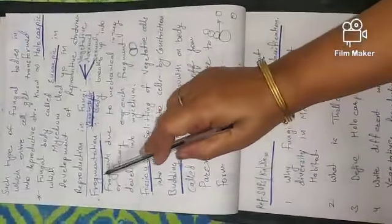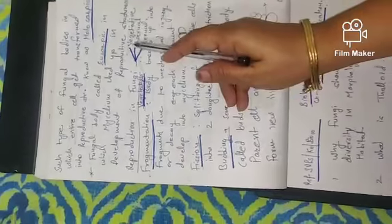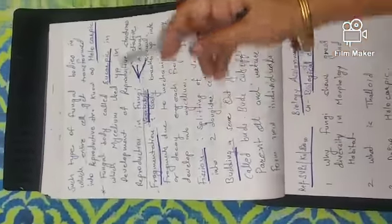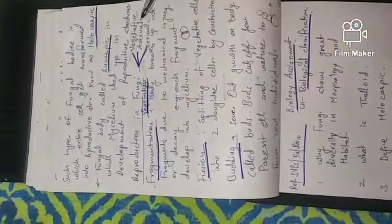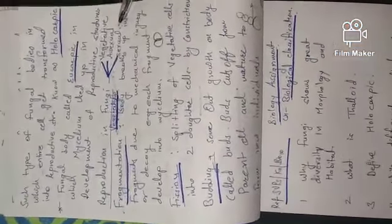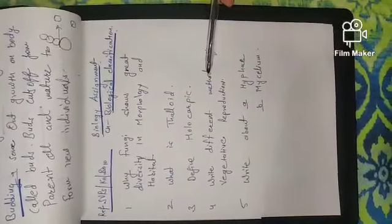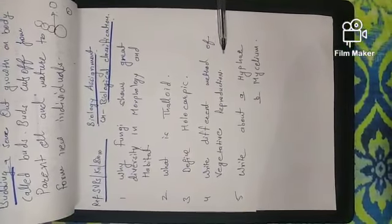Today we done only the characteristics of fungus and we started the vegetative reproduction. Next time we will start with asexual and sexual reproduction in fungus. You have to complete the assignment work in your notebook. Have a nice day.